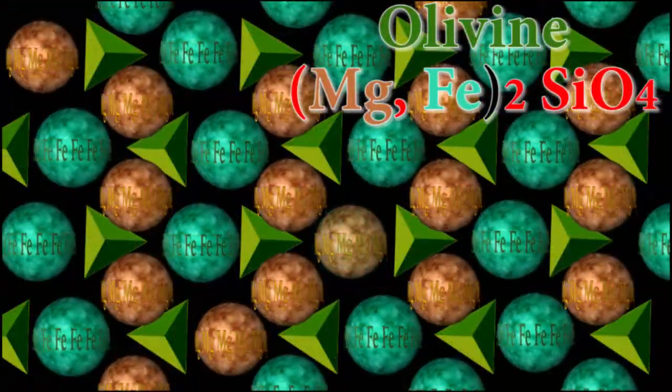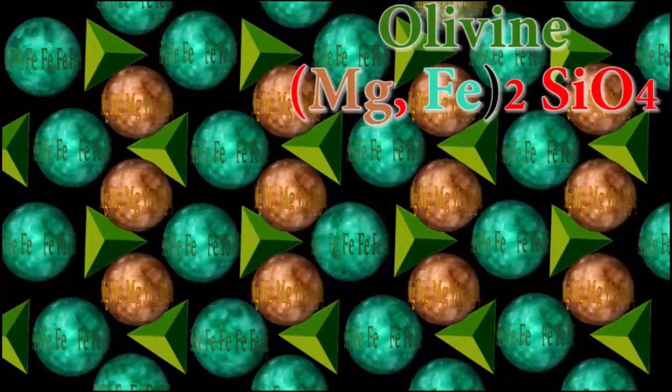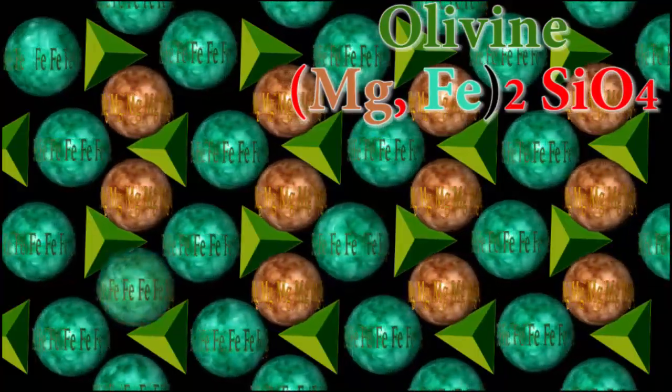When you can substitute out one ion for another in the mineral formula, like here iron can substitute magnesium, or vice versa, we refer to the mineral species as a solid solution.